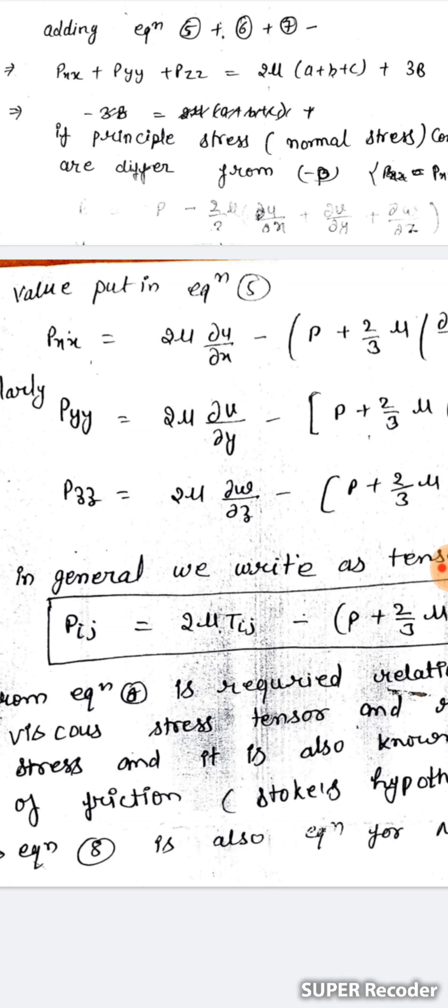Equation eight gives the required relation between the viscous stress tensor and the rate of strain tensor. This is also known as Stokes' hypothesis and Stokes' law of friction, and it is valid for Newtonian fluids. This relation is important in fluid dynamics because it allows conversion between stress and strain components — if stress increases, strain increases, and vice versa.